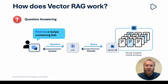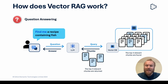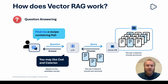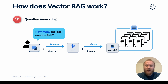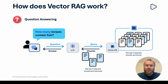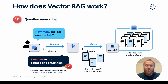The most relevant chunks are retrieved and returned to the LLM in order for it to answer the user's question. This approach can answer simple questions, but it can be slow. Large context windows can be expensive, and it fails with more complex tasks that require an understanding of the domain or information about the entire data store.